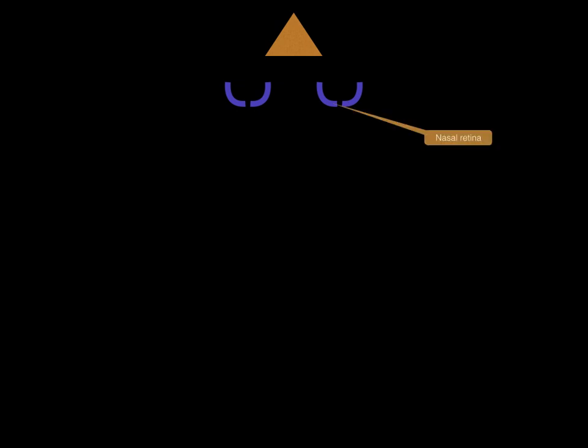Let's start with our two eyes. The back of each eye is covered by the retina, which converts the light images we see into a signal the brain can process. Think of the retina of each eye in two halves. I will add in a nose to help explain. The half of the retina closest to the nose is called the nasal retina, while the half furthest from the nose is called the temporal retina.